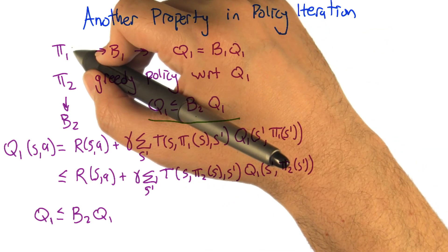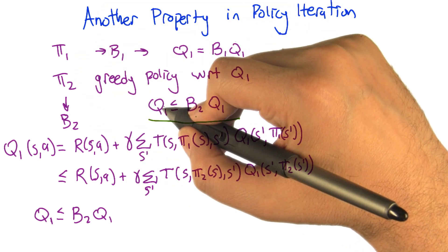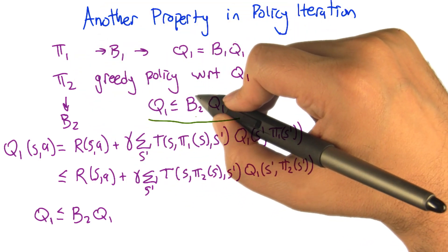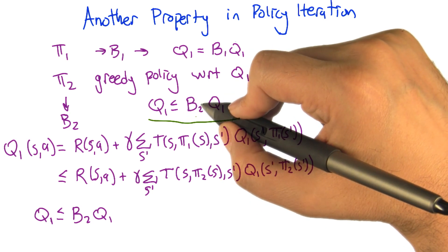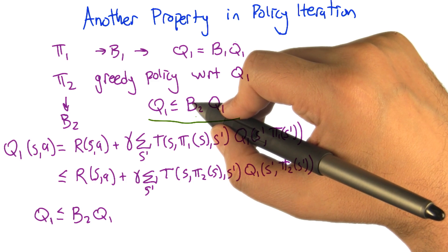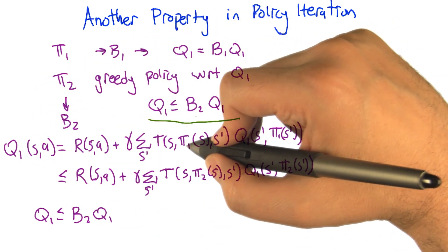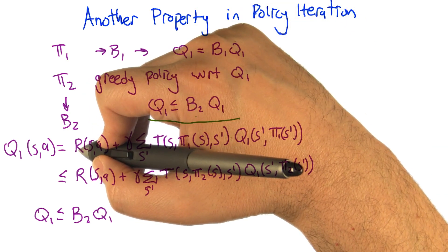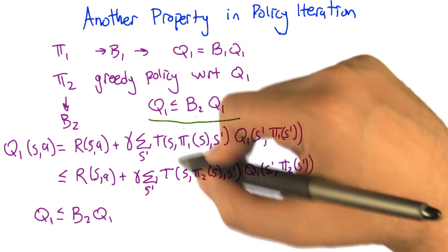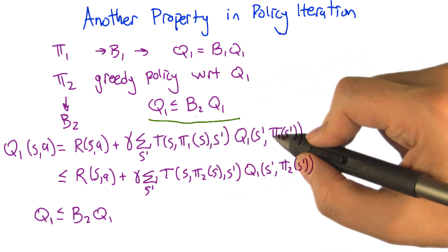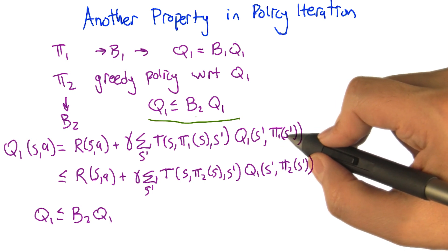Intuitively, what we're saying is we do policy evaluation on Pi1, we get some value function Q1, and then we do one step of essentially value iteration using the greedy policy with respect to Q1, and that's going to make it no worse, possibly better. The reason for that is: what is Q1? Q1 is the fixed point of the B1 operator, so it's the reward plus the discounted expected value for taking action Pi1, and then ending up in some new state S' and taking action Pi1(S') from that state.